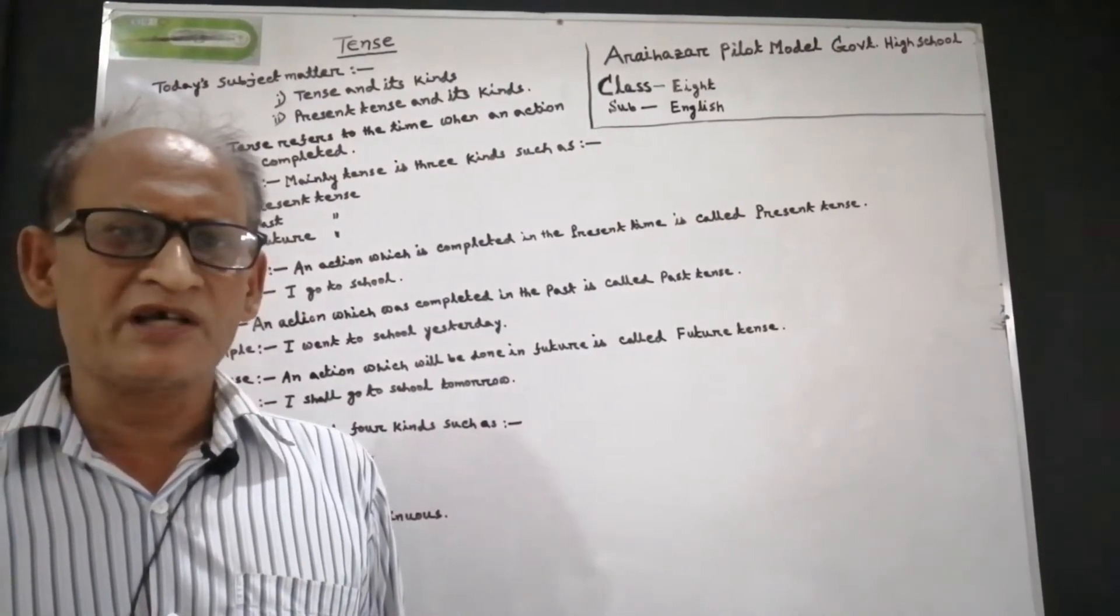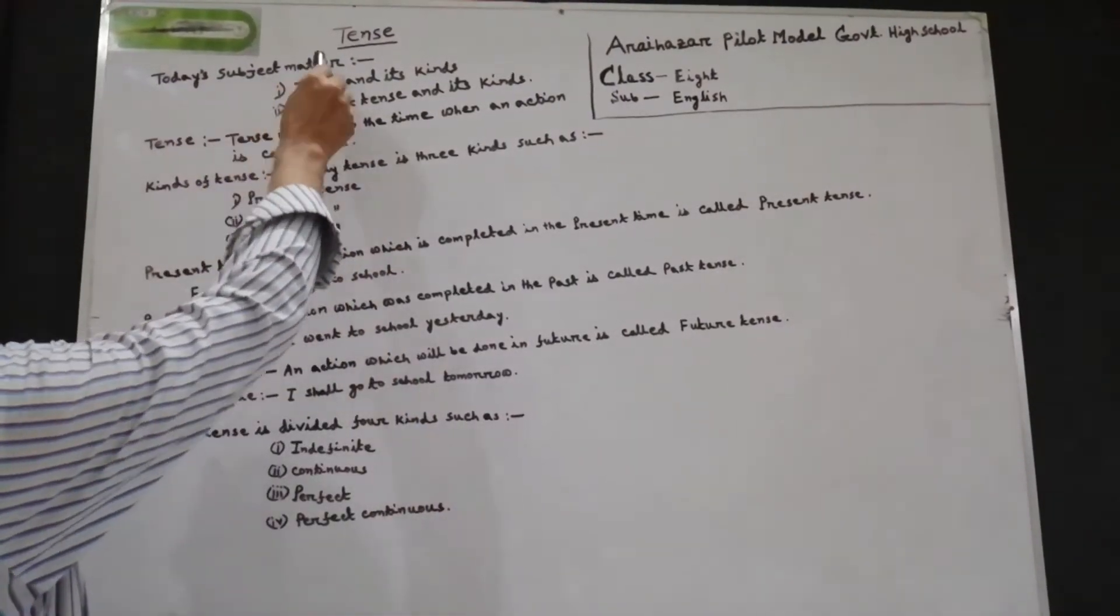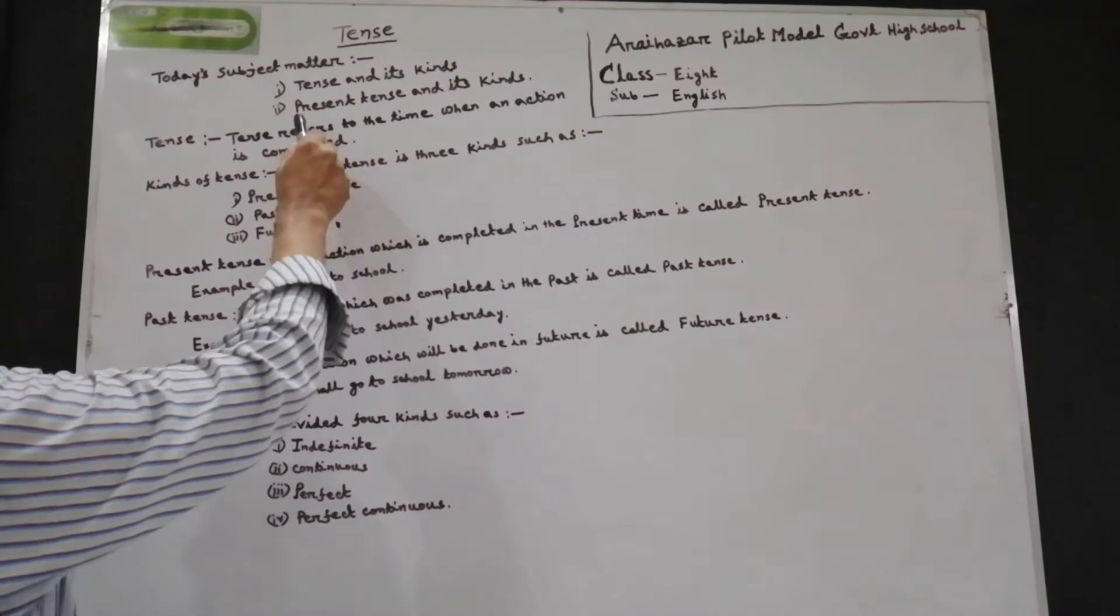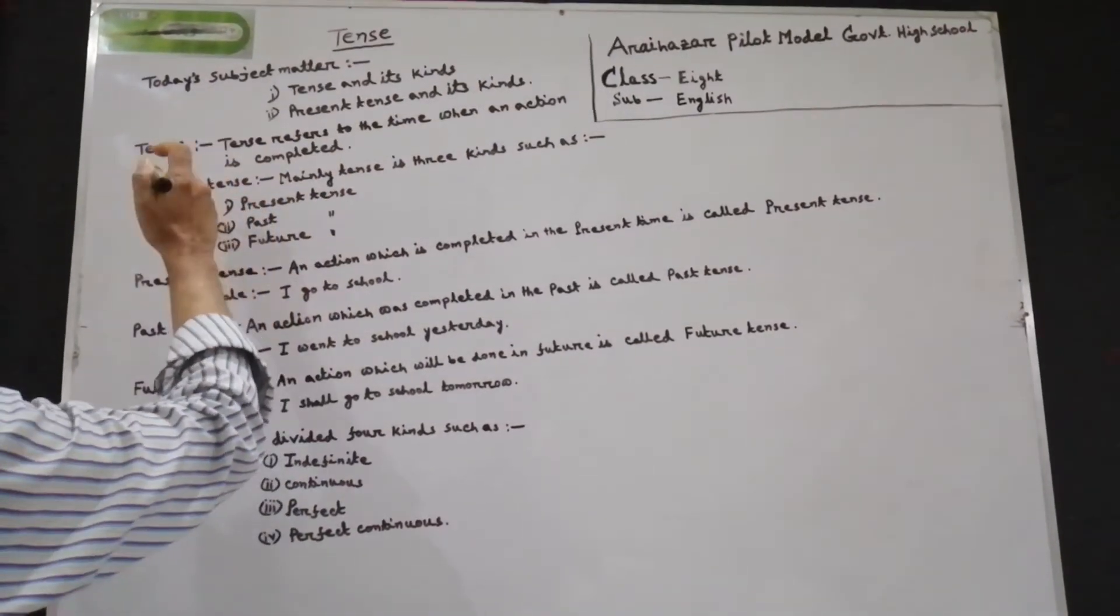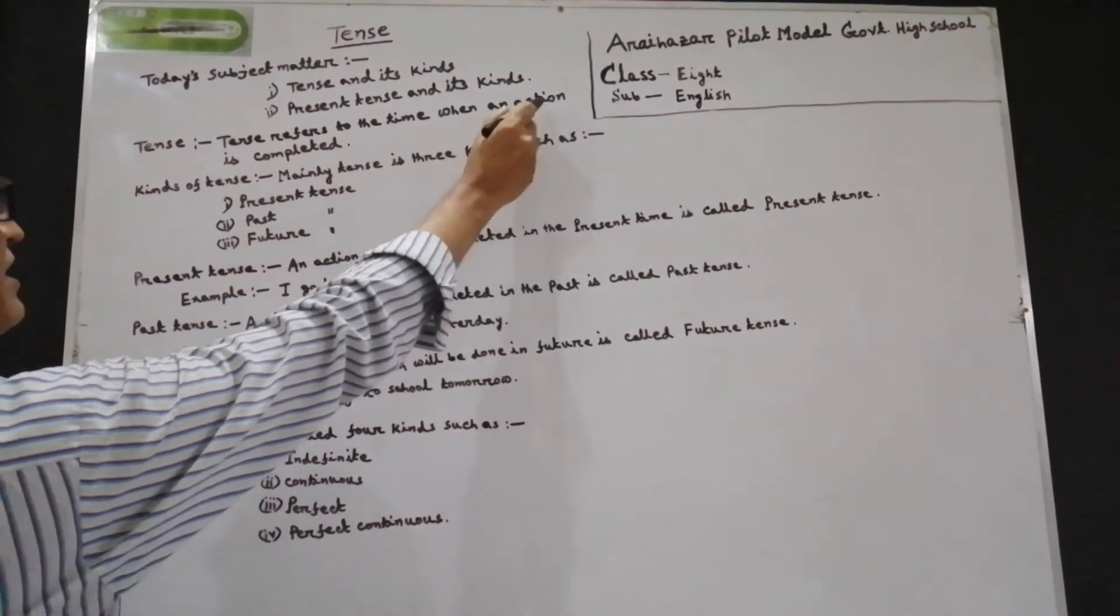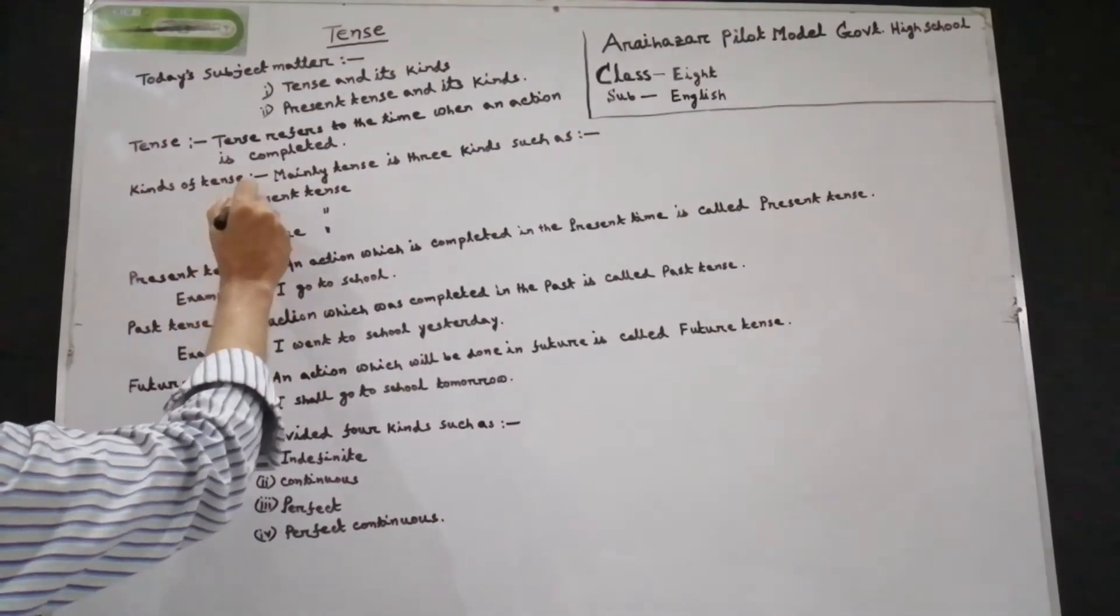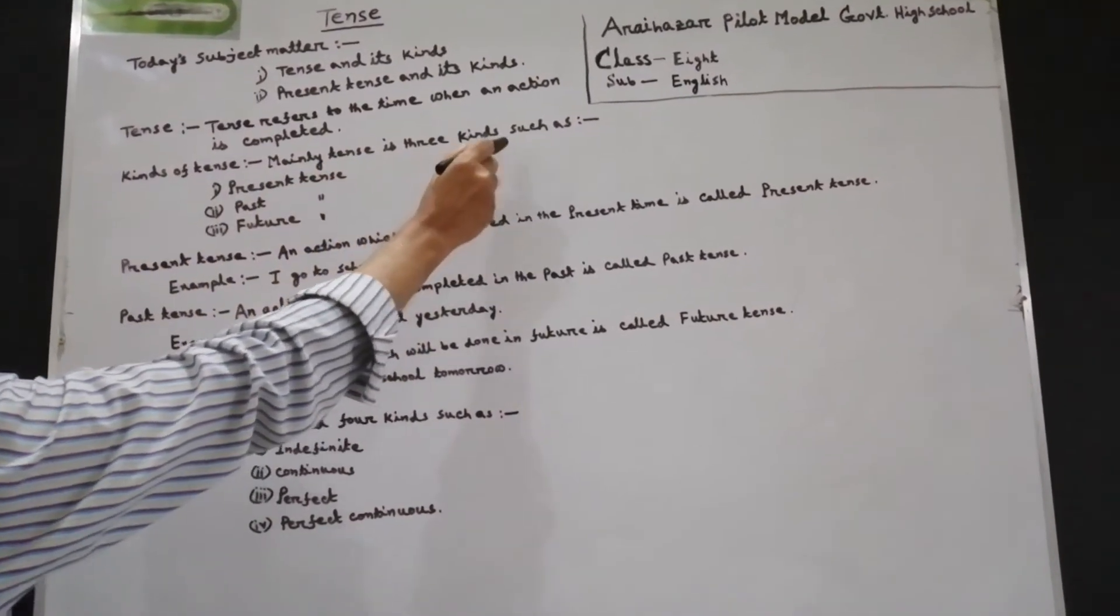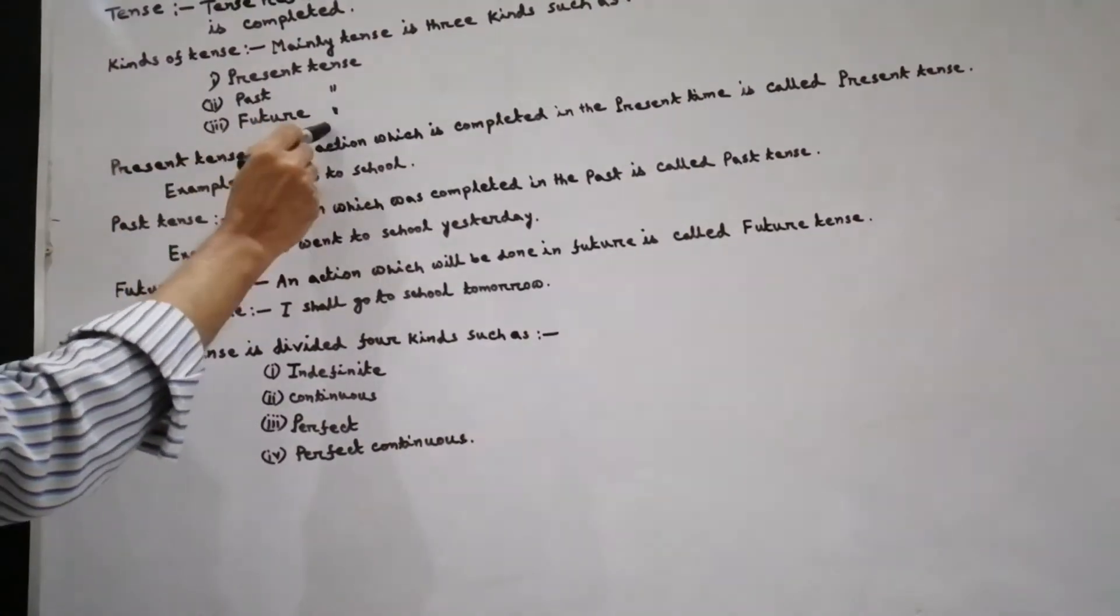Now I am going to start your online English class. Listen to what I say. Today's subject matter: tense and its kinds. Present tense and its kinds. Tense - what is tense? Tense refers to the time when an action is completed. Kinds of tense: mainly tense is three kinds, such as present tense, past tense and future tense.